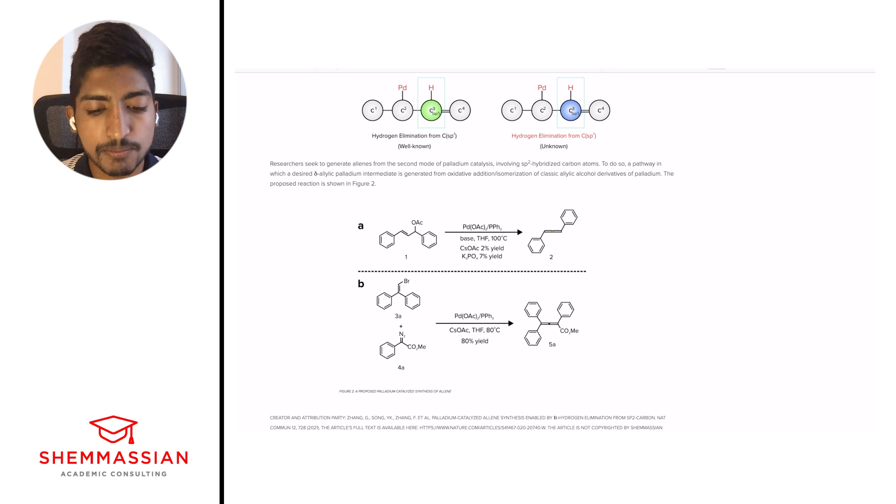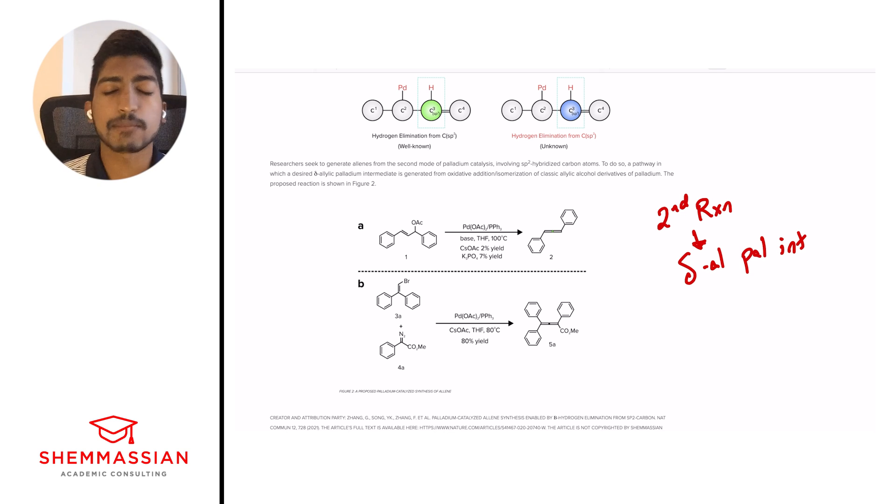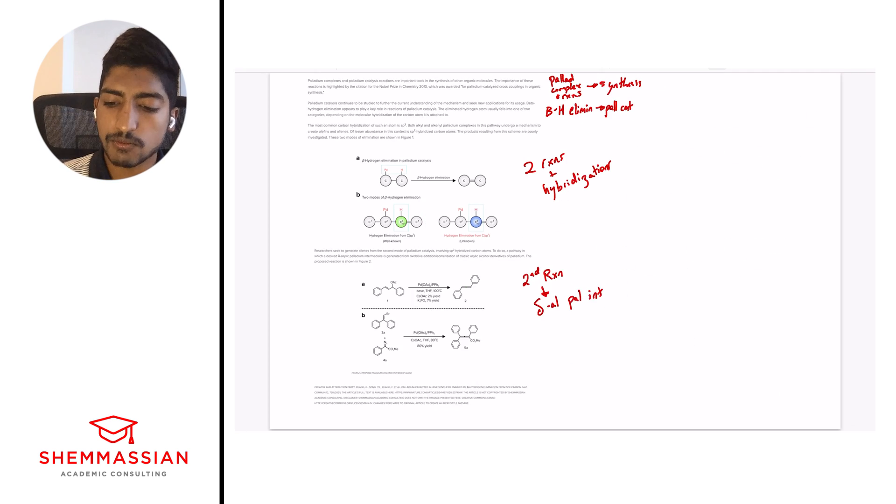Researchers seek to generate allenes from the second mode of palladium catalysis involving sp2 hybridized carbon atoms. To do so, a pathway in which a desired delta allelic palladium intermediate is generated from oxidative addition isomerization of classic allelic alcohol driven as a palladium. The proposed reaction is shown in figure 2. All right. And so this is the reaction it's talking about. And so, again, I don't like to focus too much on the figures. But what is happening? And so this is the second reaction, right? That's what we're looking at. And this is talking about the delta allelic palladium intermediate, right? A little bit longer of a summary, but exactly. We're talking about the second reaction from the previous paragraph. And we're focusing on this delta allelic palladium intermediate from this reaction, right? And I'm not going to go too much into depth here. No, usually we don't even have to come back to these sort of summaries. It's more of like a table of contents in a sense. So you're going to use it to find the details you're looking for. All right. And with that, we're ready to go on to our questions.